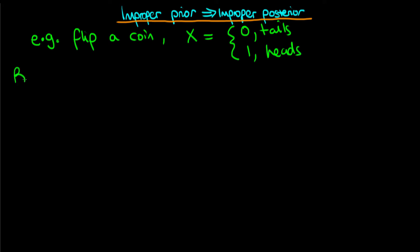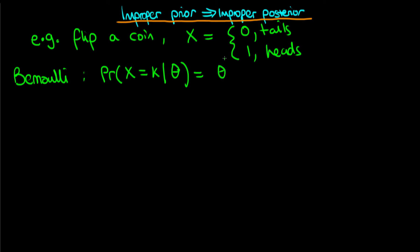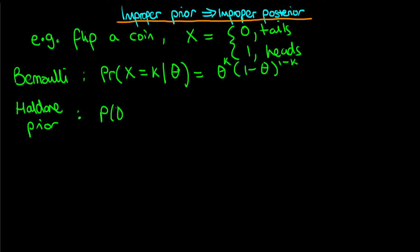We're going to assume the simplest possible likelihood in this circumstance, which is just a Bernoulli likelihood. This says that the probability that x equals k, where k can equal zero or one, given a probability of heads theta, is just equal to theta to the power k times one minus theta to the power one minus k. We're next going to assume a particular prior first proposed by Haldane. This prior on theta has the form P(θ) = 1 / (θ(1 − θ)), for theta between zero and one.